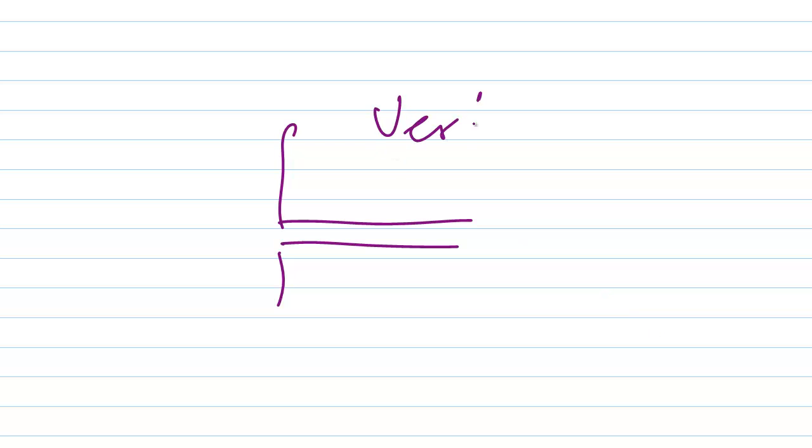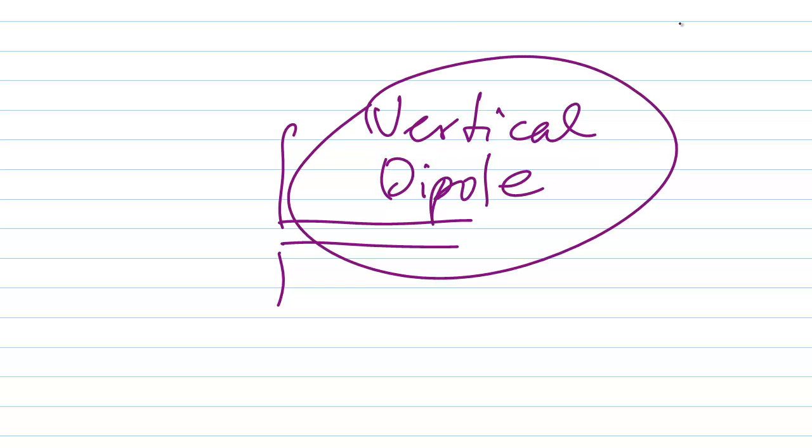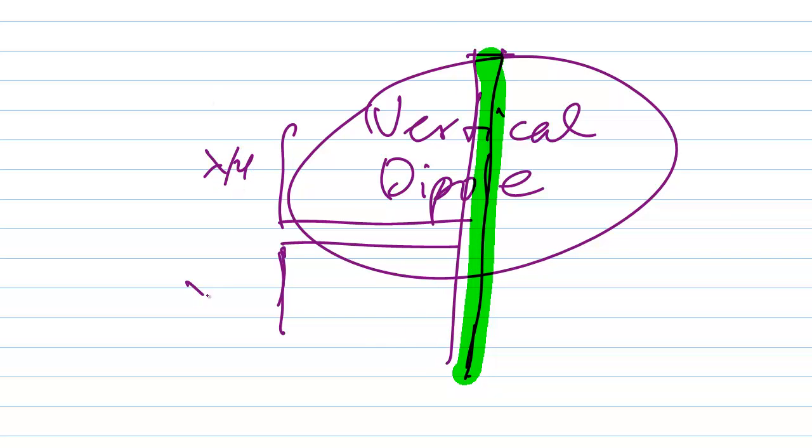And in fact, at VHF, you will find vertical dipoles like this mounted on masts and they work perfectly well. Quarter of a wavelength on each leg of the dipole. They work perfectly well.